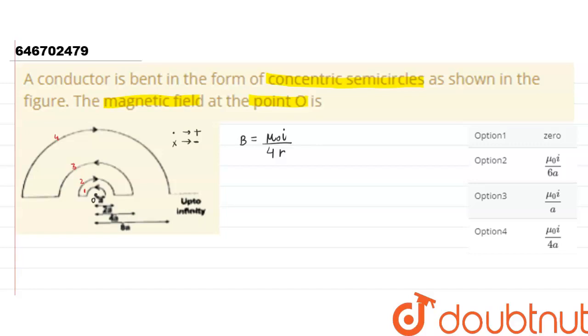So the net magnetic field B_net equals μ₀i/4—this is a constant—and the radius will be changing. For the first loop, the radius is a and the field is positive, so it is 1/a. For the second, it is negative, so minus 1/(2a).